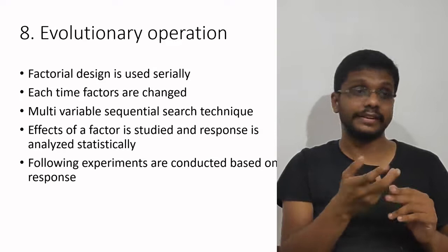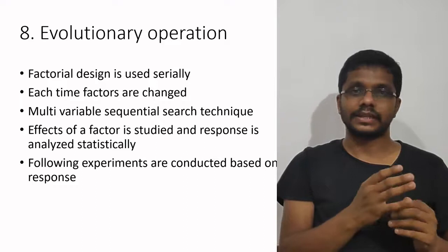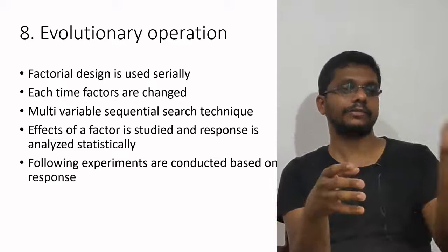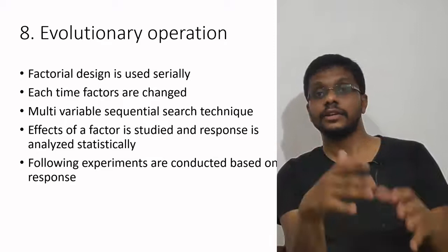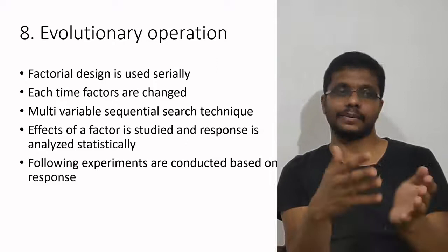Effective factors are studied and the response is analyzed statistically — it is essentially a statistical method. Following experiments are conducted based on the response: once we get the best result from one experiment, it tells us what experiment to do next. If changing one carbon source decreases yield, we can replace it with another in the next set of experiments. If a nitrogen source gives better results, we carry it over to the next experiment.